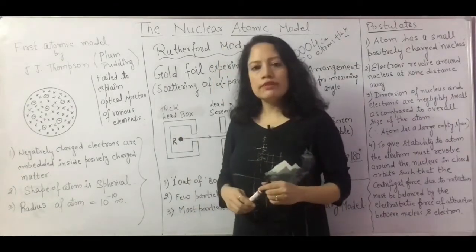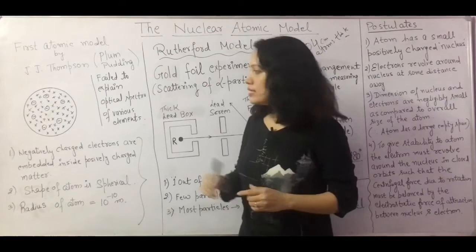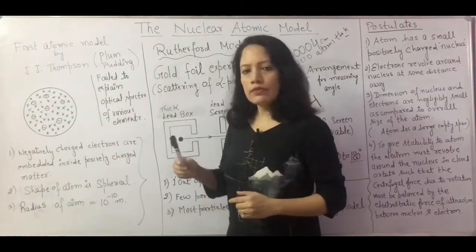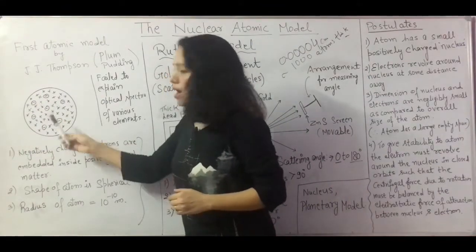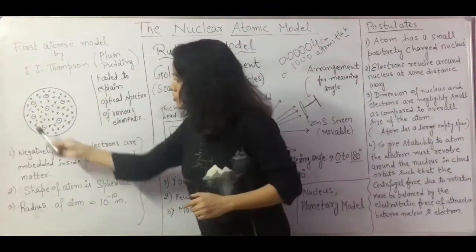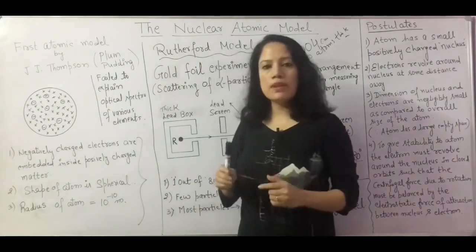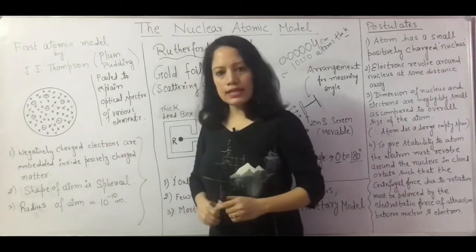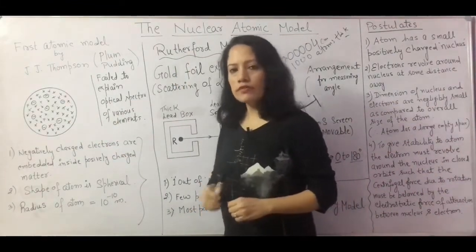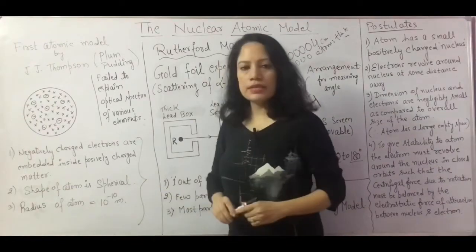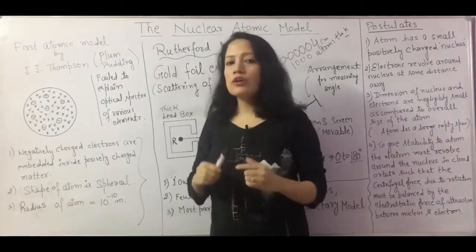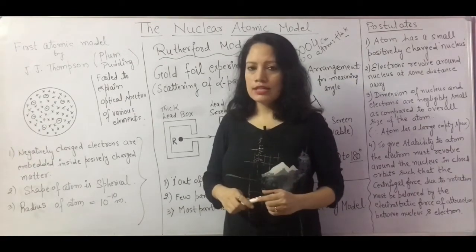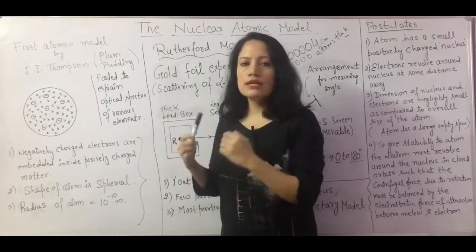The first atomic model was given by J.J. Thomson. According to him the atom is made up of positively charged matter within which negatively charged electrons are embedded. Because of this structure his model is also known as the plum pudding model. According to him the atom is perfectly spherical in shape and its radius is of the order of 10 to the power minus 10 meter. But this model could not explain the optical spectra of hydrogen and various other elements, so on that ground this model failed.